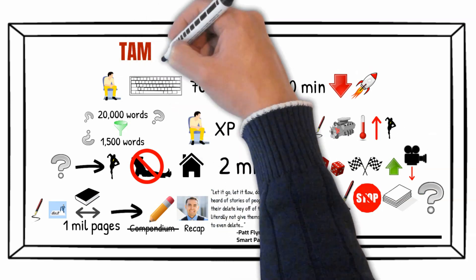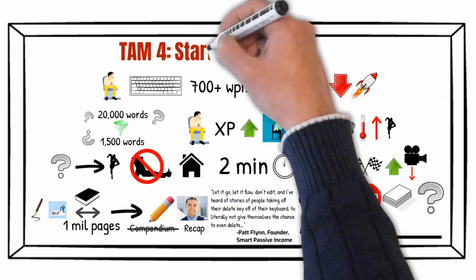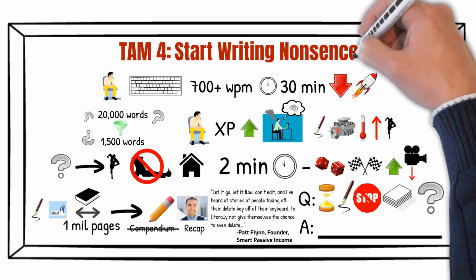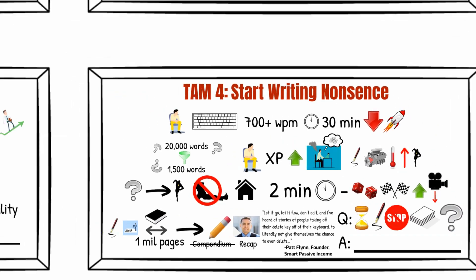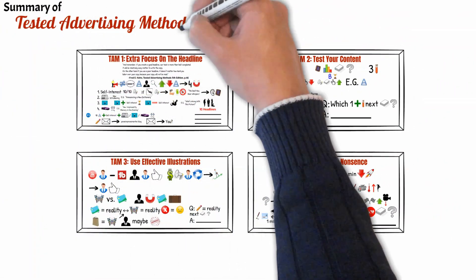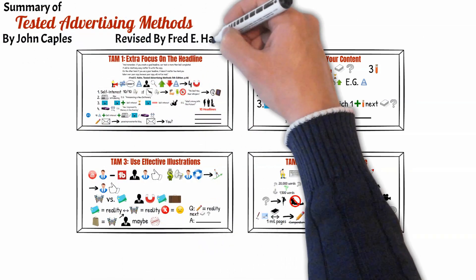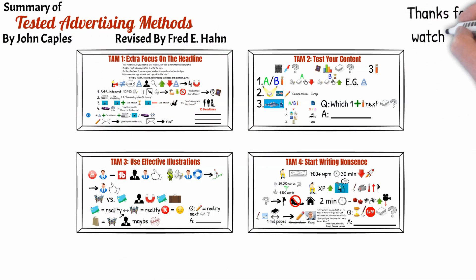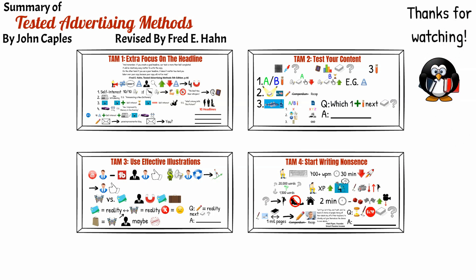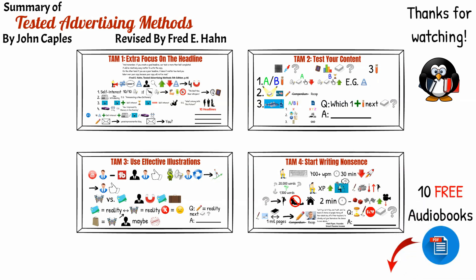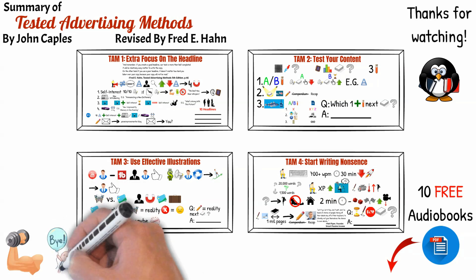Tested advertising method 4 is: Start Writing Nonsense. Thanks for watching, Improvementors. Hope you've learned something — or some 2 things — which were new today. If you'd like to get 10 Free Audiobooks, check out the 10 Free Audiobooks PDF in the description below. Stay awesome, and see you in the next videos. Bye bye!